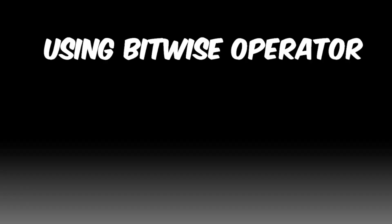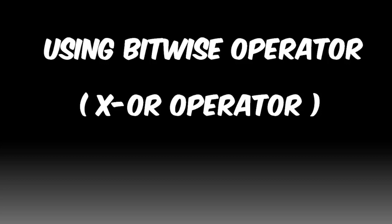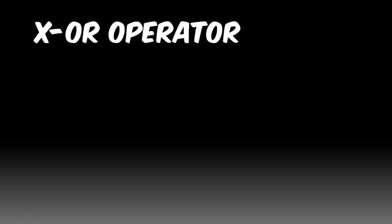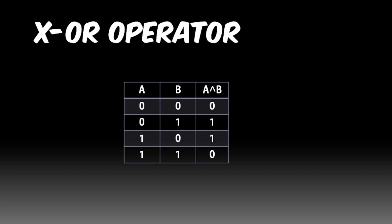Now the third method: using the bitwise operator, or we can also say XOR operator. Before talking about this topic, let's understand the bitwise operator. The bitwise operator converts a decimal number into binary and then performs a bitwise operation. The XOR operator can be summarized in a truth table: when we have like bits the output is 0, and when we have unlike bits the output is 1.